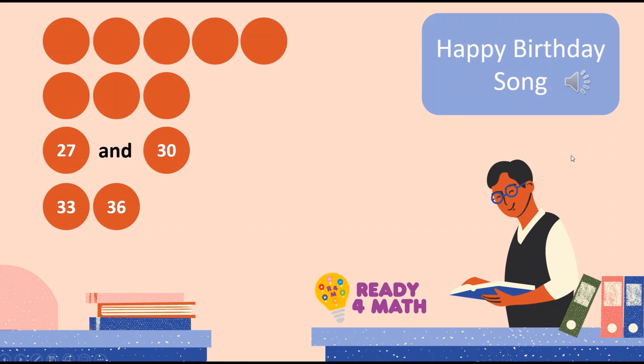Let's remove another one: 3, 6, 9, 12, 15, 18, 21, 24, 27, and 30, 33, 36. Good work. Let's remove one more: 3, 6, 9, 12, 15, 18, 21, 24, 27, and 30, 33, 36.